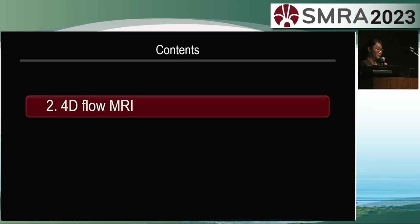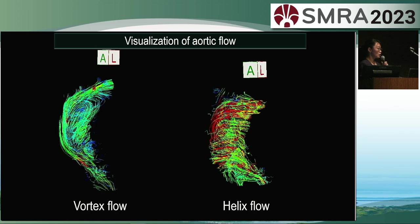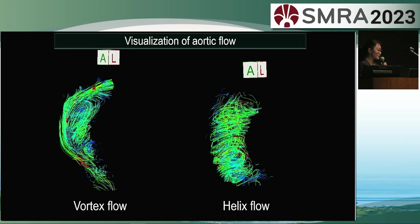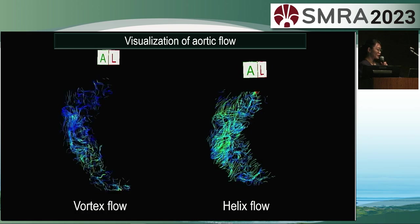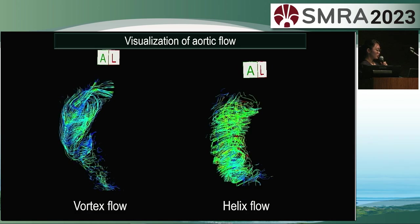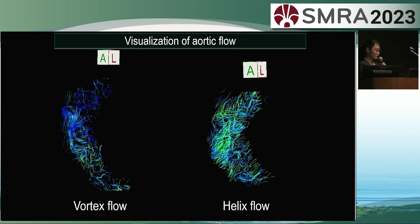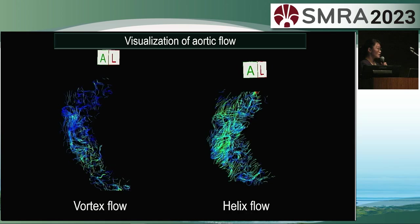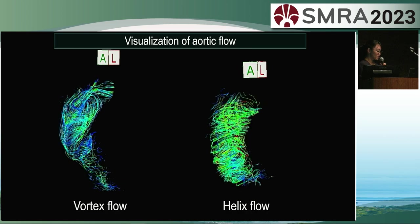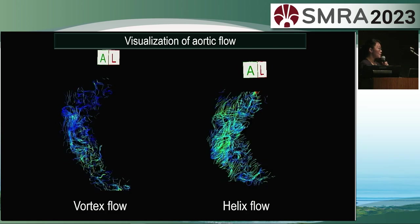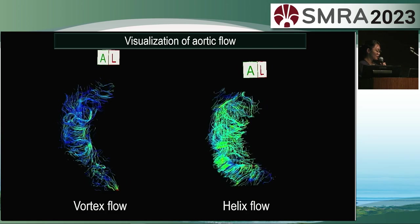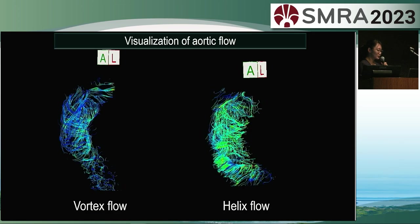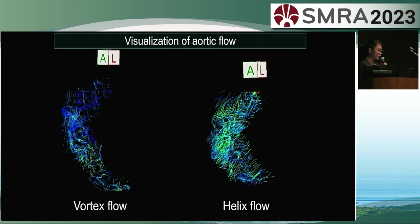Next, I would like to introduce 4D flow MRI. One of the key features of 4D flow MRI is its ability to visualize blood flow. Do you notice the swirling patterns in the flow? On the left, we have a case with a vortex flow, while on the right, we have a case with a horizontal helix flow. In some cases, a combination of these two vortex types can be present, making qualitative assessment challenging. In such cases, measuring at a single cross section may not yield accurate quantitative values based on flow direction.